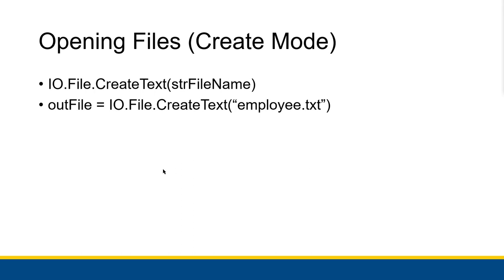To open files in create mode, use the io.File.CreateText method and pass in the file name. For example: outfile = io.File.CreateText("employee.txt"). This creates a new blank file called employee.txt — deleting any pre-existing file with that name — in your project folder. It also creates a StreamWriter object that interfaces with that file and assigns it to the outfile variable defined previously.